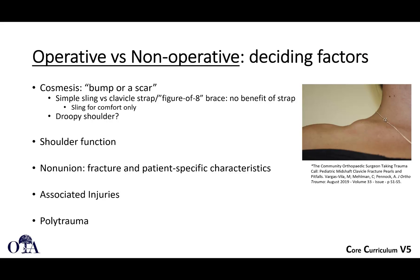When talking about operative versus non-op for a mid-shaft clavicle fracture, one conversation to have is around cosmetics: we often say we'll have to trade a bump for a scar — fixing means a scar and implants that sometimes bother the patient and may need removal. But without treatment and with significant displacement, that can lead to a bump and in some cases significant shoulder droop as well.